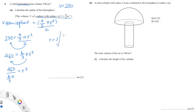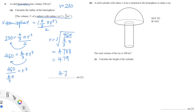Since we want to find r, we're going to take the cube root of 460 over (4 over 3 pi). You can just plug those values into your calculator and you should get a value of 4.788, which rounds to 4.79. So our radius is 4.79 cm.